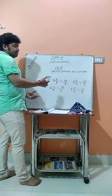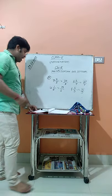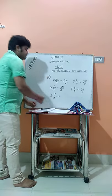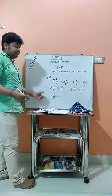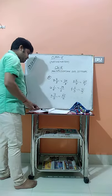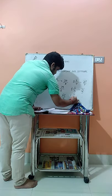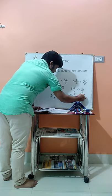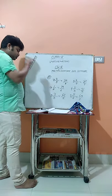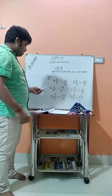Next is 9 and 3/7: 9 times 7 is 63, plus 3 is 66 — so the answer is 66/7. And 8 and 5/8: 8 times 8 is 64, plus 5 is 69 — so the answer is 69/8. By this way you will get the answers.